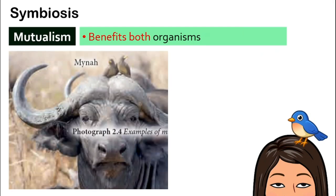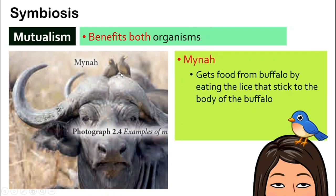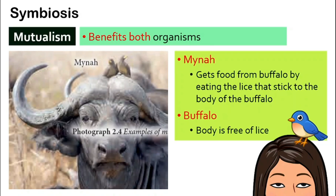One more example: the miner bird and the buffalo. The miner is the little bird you see on top of the buffalo's head. The miner gets food by eating the lice on the buffalo's body, so the miner is happy because it gets food. The buffalo is happy because its body is now free of lice. They help each other — both are very happy — and this interaction is called mutualism.